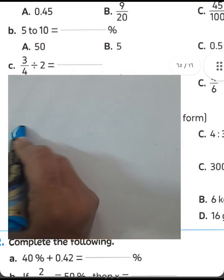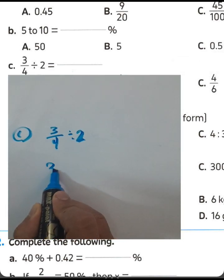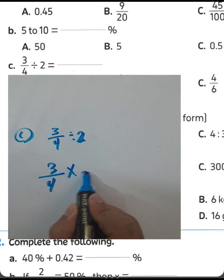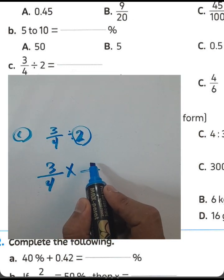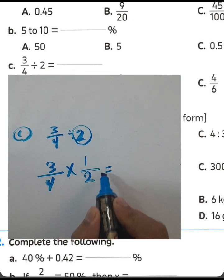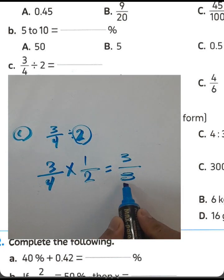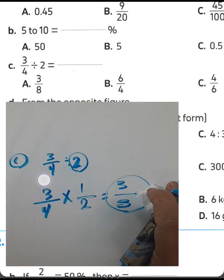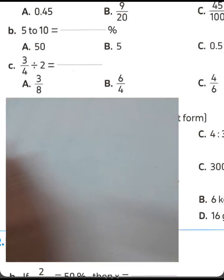Question letter C: we have 3/4 divided by 2. Convert division to multiplication and write the reciprocal of 2, which is 1/2. Then 1 times 3 equals 3, and 2 times 4 equals 8. The result is 3/8. Letter A.